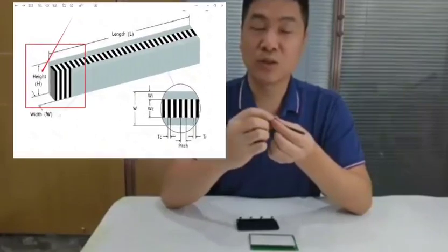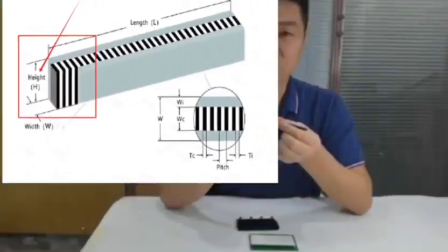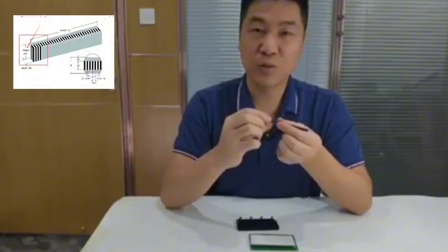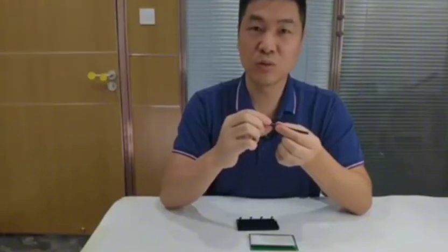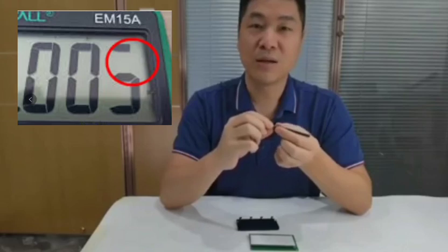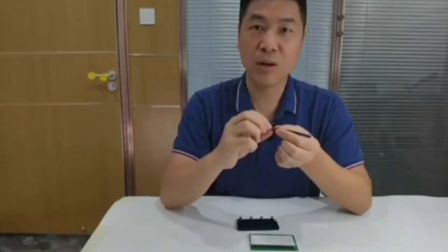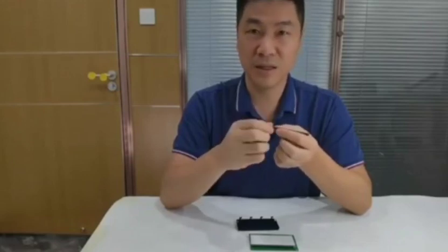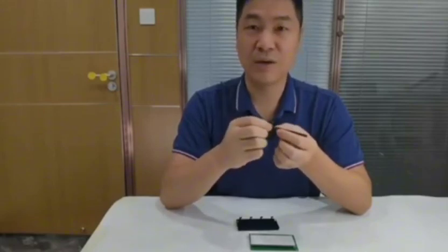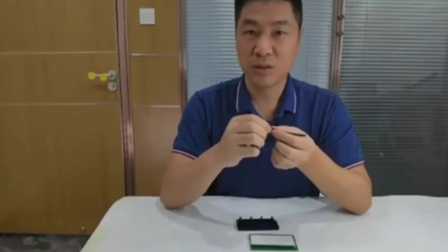The most important parameter of a Zebra connector is the height. If the height is not enough, it will cause missing strokes or poor connection. But if the height is too high, it will produce a rainbow phenomenon. So we must pay careful attention to the compression ratio of the Zebra connector.